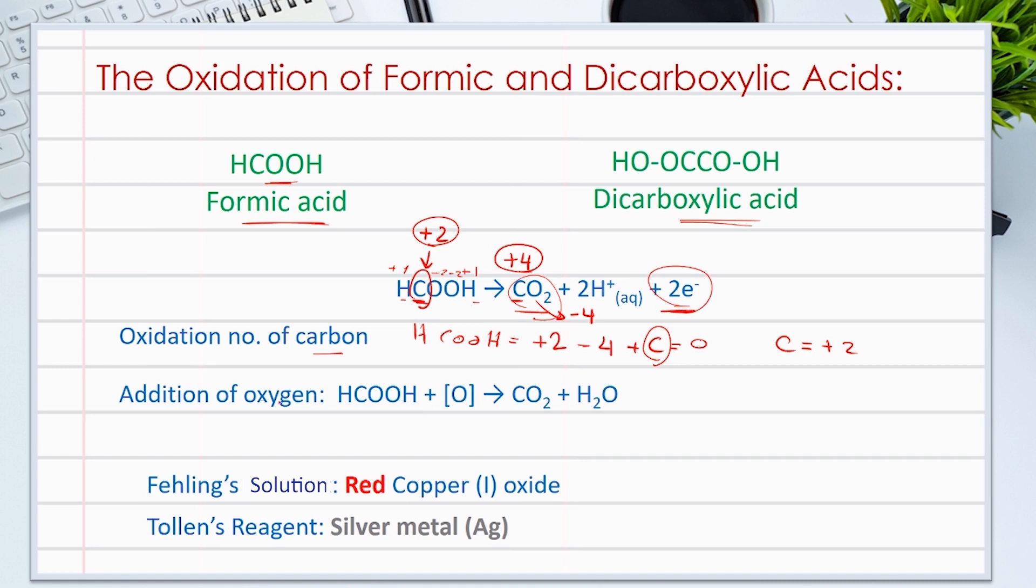If we have oxygen as an oxidizing reagent, the formic acid reacts with the oxygen to give carbon dioxide and water. In this reaction, carbon is oxidized as well from plus two to plus four.